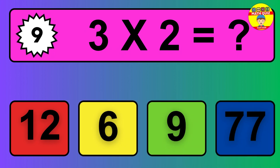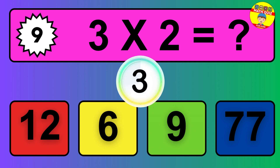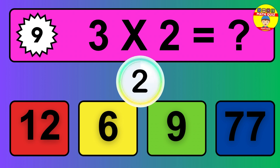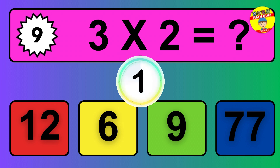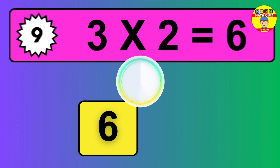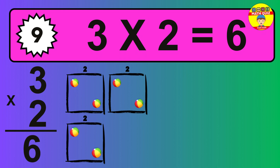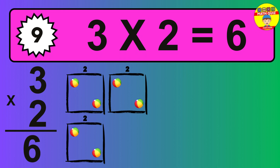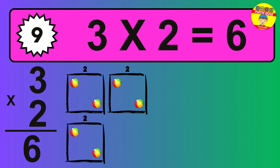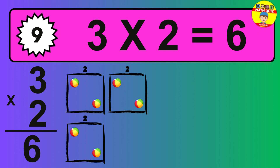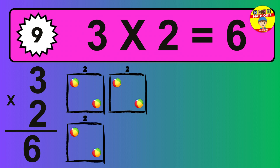Question 9. Three times two equals what? The answer is three times two is six. To calculate, we have three groups with two balls each one. So how many balls do we have? Six balls.